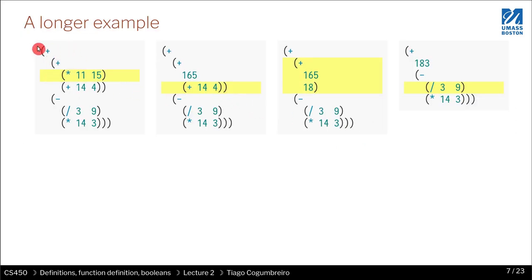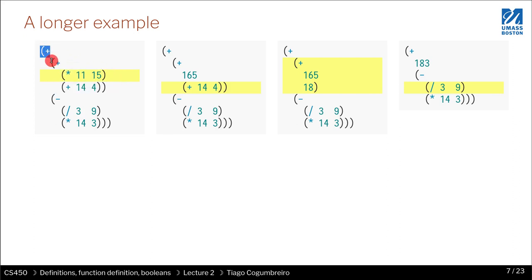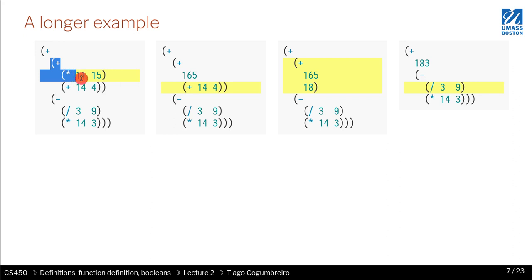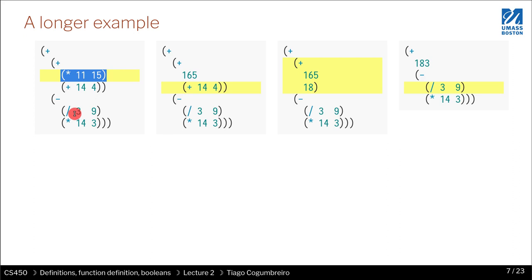We start with a kind of depth-first search. Looking at the first expression: is this sub-expression ready to evaluate? No, because the first argument is a composite expression — a function call. Is that expression ready to evaluate? No, because one of its arguments is itself another expression. Is that inner expression ready to evaluate? Yes, because both of its arguments are literal values. When that happens, we perform the multiplication — that's the first step of evaluation.